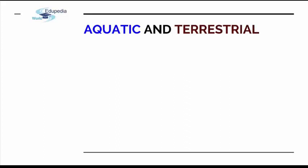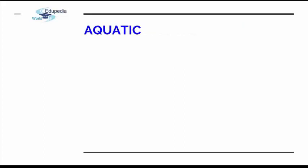Besides divisions by complete and incomplete, there are also aquatic and terrestrial ecosystems. This is the biggest division on this planet, and of course both of them have some subdivisions. For now we'll talk about aquatic ecosystems.